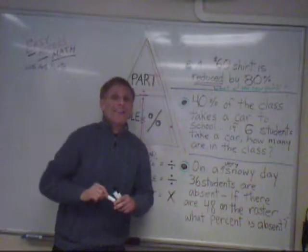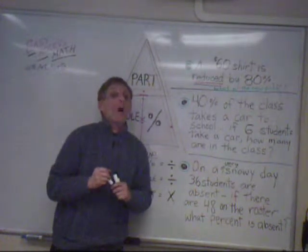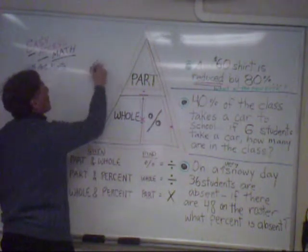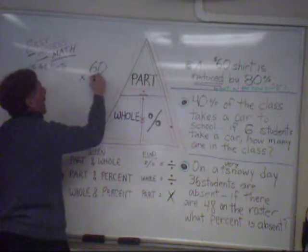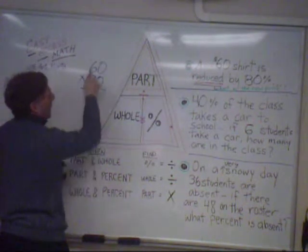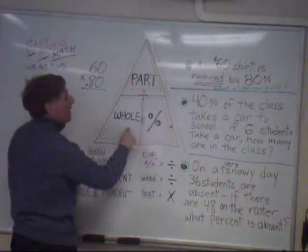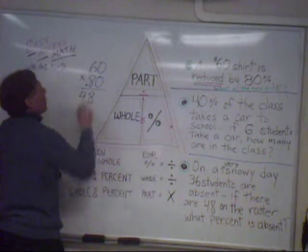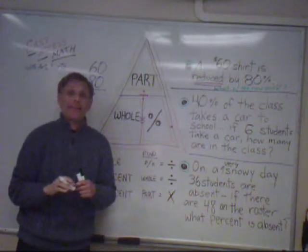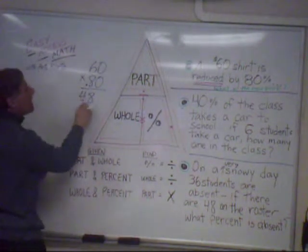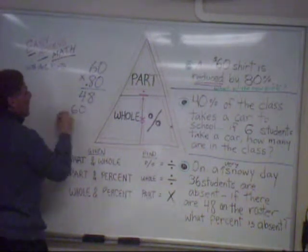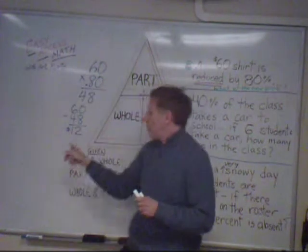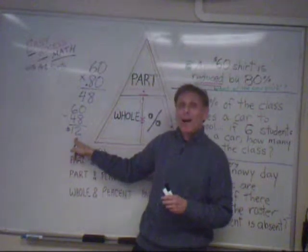We unpause the video, so now I'm ready to go over these examples. First one: a sixty-dollar shirt is reduced by eighty percent. So I have sixty times point eighty — I have the percent and the whole, the original price — and I get forty-eight dollars. But that is the reduction. Now I take that reduction and I subtract, and twelve dollars would be my new selling price with those numbers.